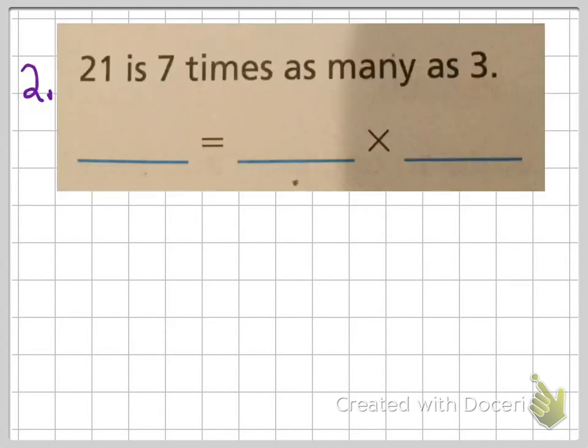Problem number 2. 21 is 7 times as many as 3. Please copy down the words and the sentence, the number sentence below, just like this in your notebook, and complete it.